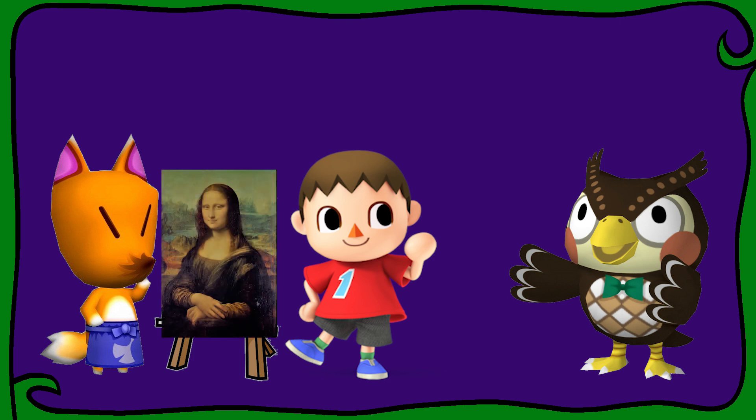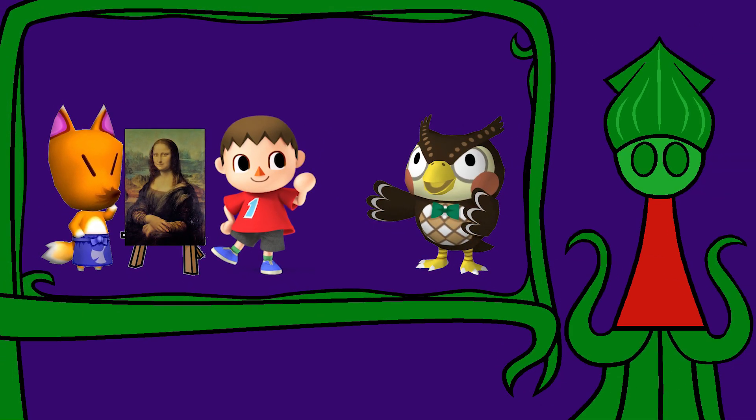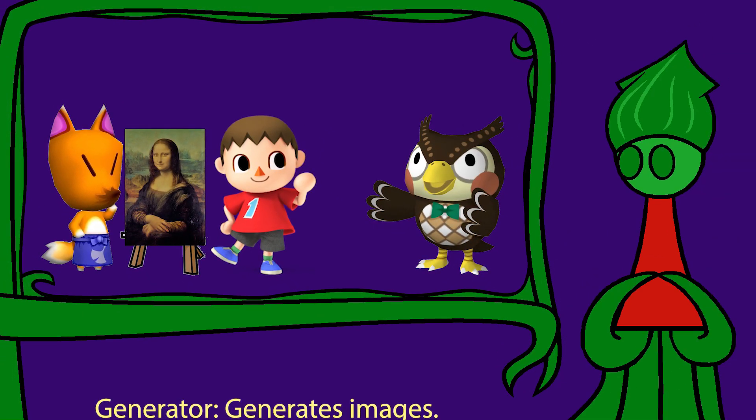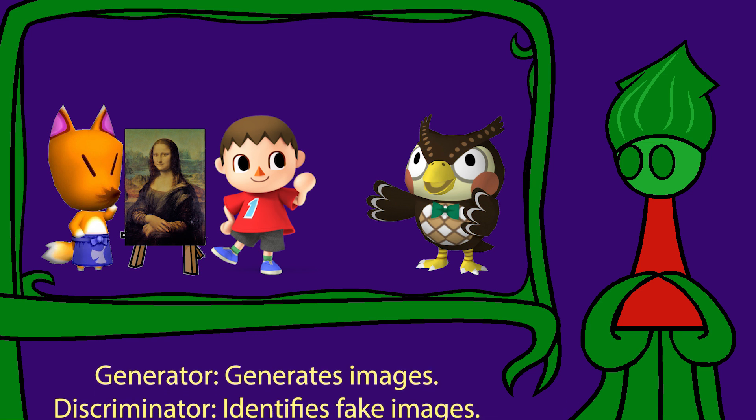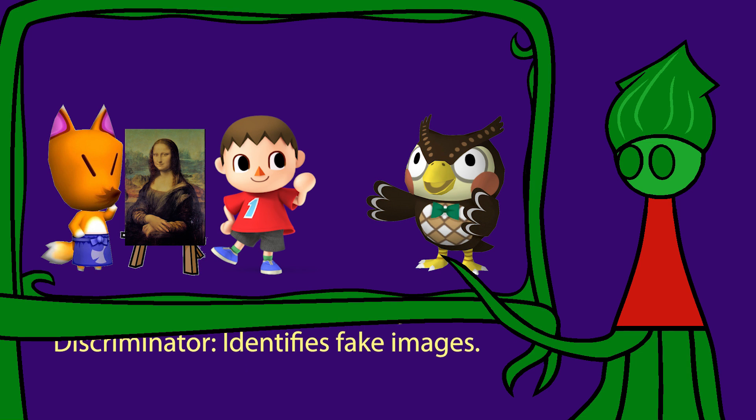And remember, you've still never seen real art. You've improved by learning to trick someone who's learning alongside you. This is my understanding of a generative adversarial network. Red is the generator. Villager is the discriminator.